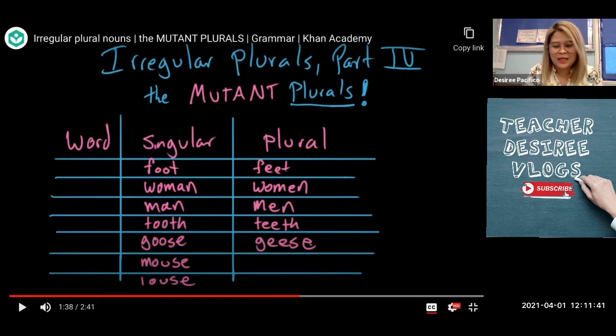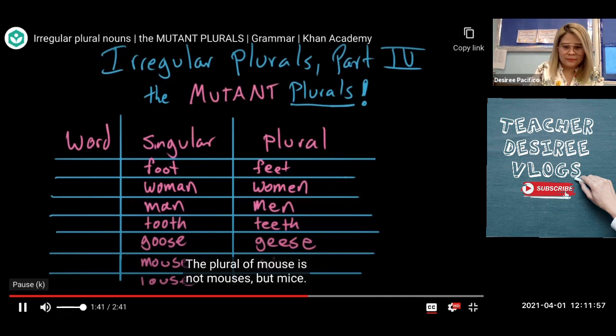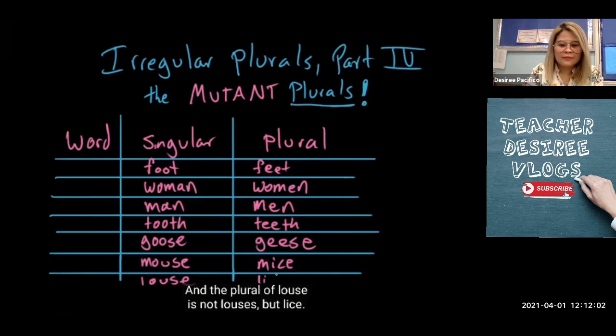Now let's see these last two words: mouse and louse. How are we changing these two words to plural? The plural of mouse is not mouses, but mice. And the plural of louse is not louses, but lice. The mouse becomes mice and the louse becomes lice.